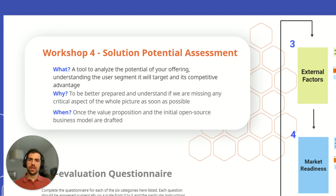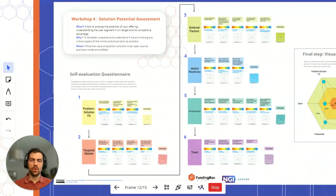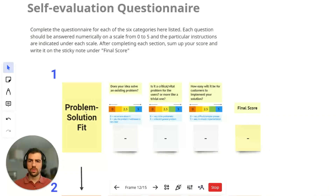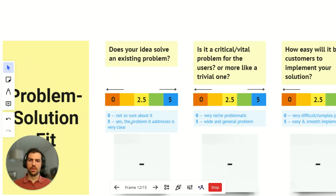Now let's have a look at the Canvas itself and the questionnaire. It is composed of six sections that you can go through. Each section has a set of questions — let's go for example to the first one, the problem solution fit. Each question has the question on top, then the ranking, the scoring color, and the scoring criteria right below it.